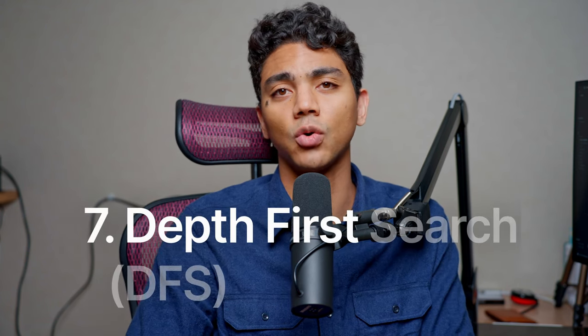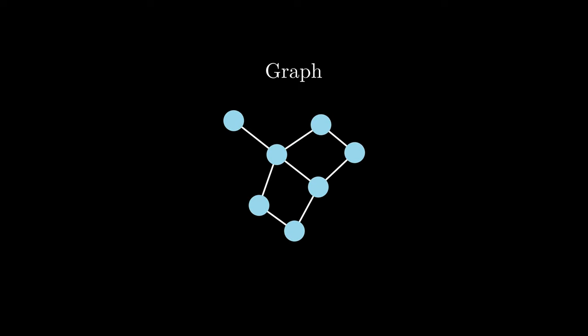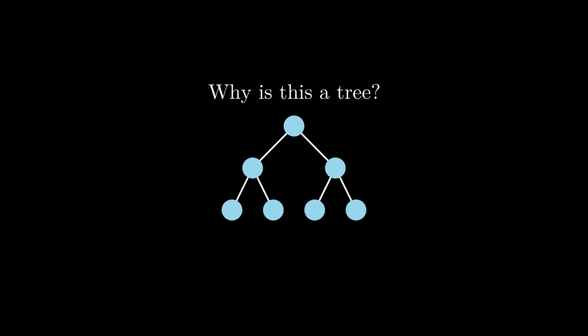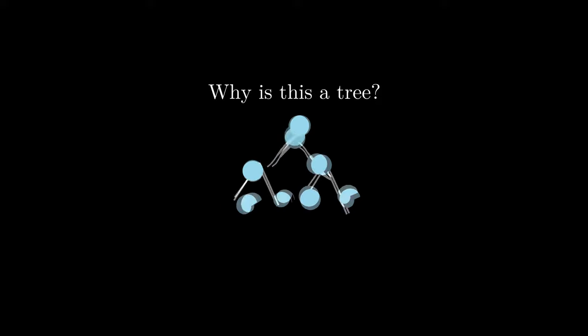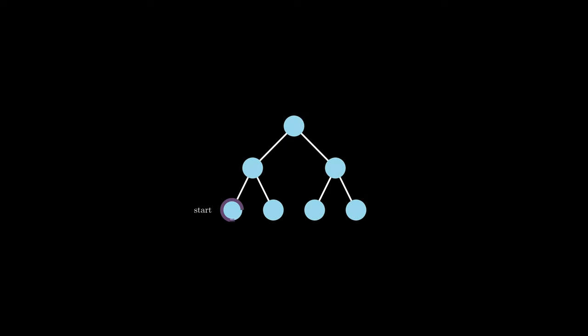Our next algorithm is another graph traversal algorithm — depth-first search or DFS. The algorithm differs slightly when dealing with graphs that are trees versus graphs that aren't. A connected acyclic graph is called a tree. Acyclic means the graph contains no cycles, and connected means every node can reach any other node in the graph, or every node has a path to any other node.